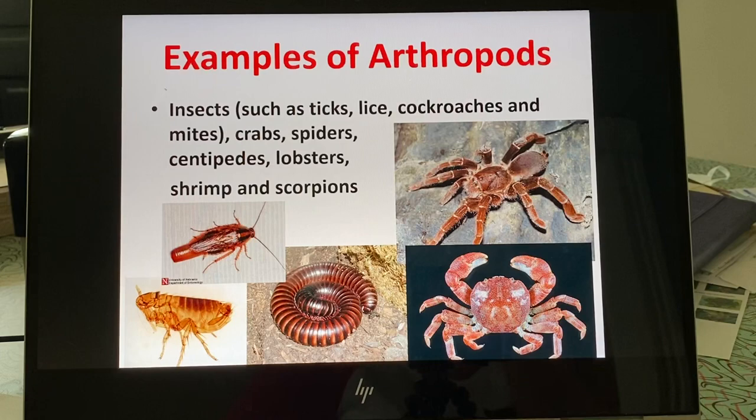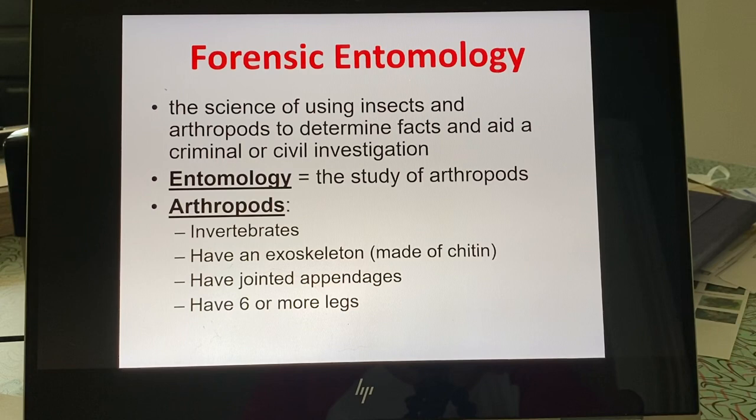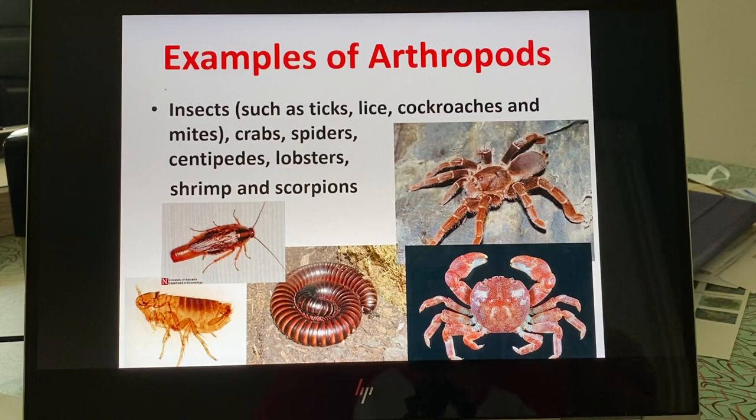If you want to get a degree in entomology, you'll usually find those departments at big agricultural schools. You can major in entomology at Iowa State, Kansas, Nebraska, South Dakota, Colorado — any of those schools associated with agriculture or that have a vet school.